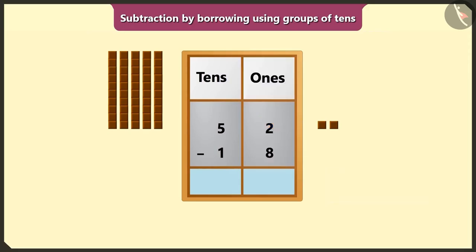So here we will borrow 1 tens from the number 5 of the box of tens. It means the number in the place of ones can borrow from its neighbor number in the box of tens.